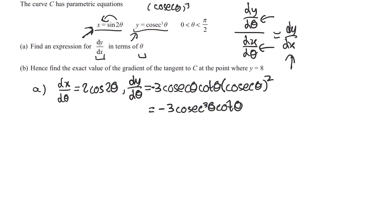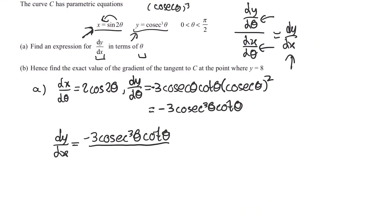To get dy/dx, we just divide dy/dθ by dx/dθ. So our final answer is minus 3 cosec cubed θ cot θ, all divided by 2 cos 2θ.